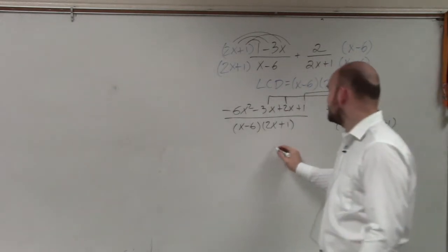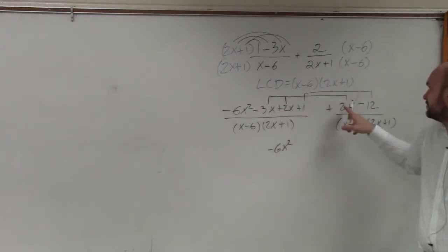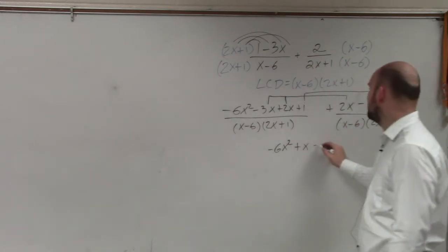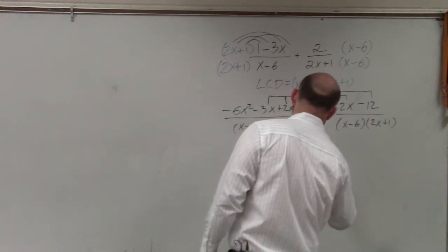So now, my final answer could be negative 6x squared. This becomes negative x plus 2x would be plus x. And 1 minus 12 would be negative 11 divided by x minus 6 times 2x plus 1.